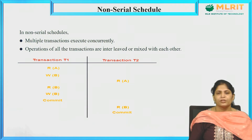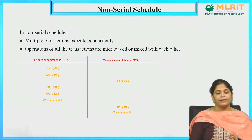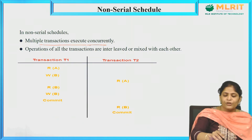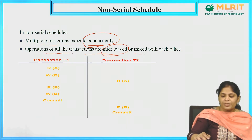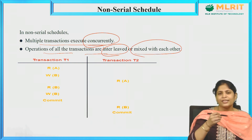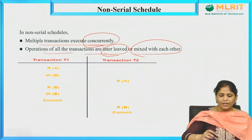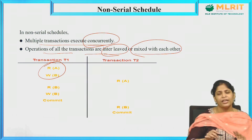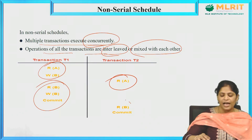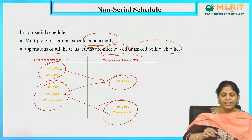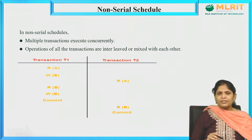What is a non-serial schedule? A schedule that has been executed in a concurrent manner, not in a serializable manner. Multiple transactions execute concurrently, and the operations of all transactions are interleaved or mixed with each other. For example, in T1 some operations are executed, then T2 executes two operations, then back to T1, then back to T2 — interleaved transactions. This is what concurrent execution means, and this leads the database to an inconsistent state.